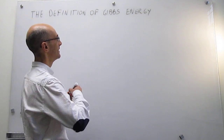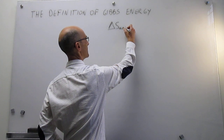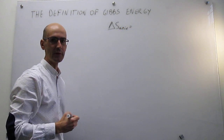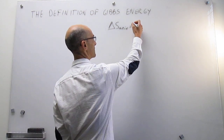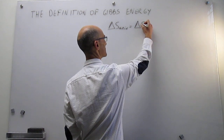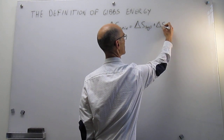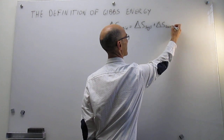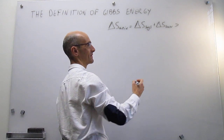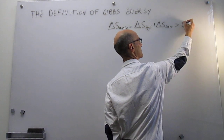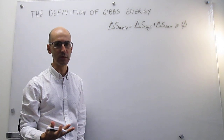We will start by looking at the second law of thermodynamics. The calculation of the change in entropy in the entire universe allows you to predict the spontaneity of a process, or whether the process is at equilibrium. The universe has two components: the system and the surroundings. If the change in entropy is larger than zero, the process is spontaneous. If it is equal to zero, then the process is at equilibrium.